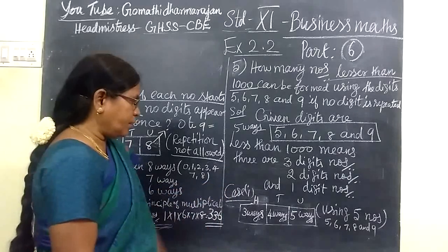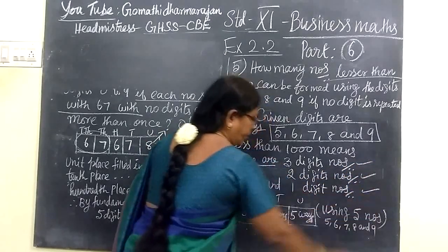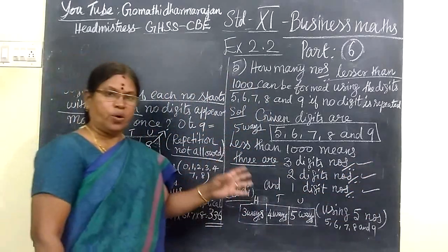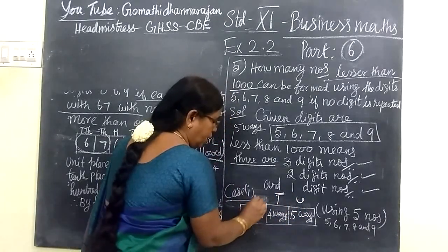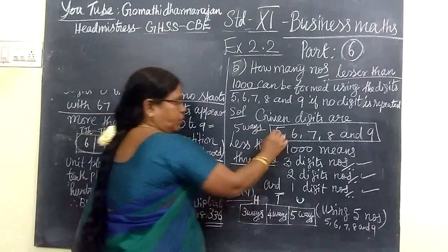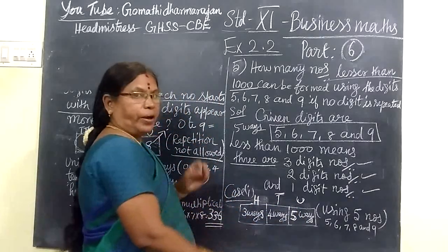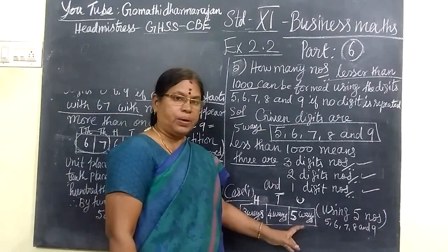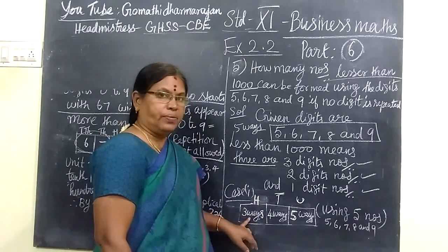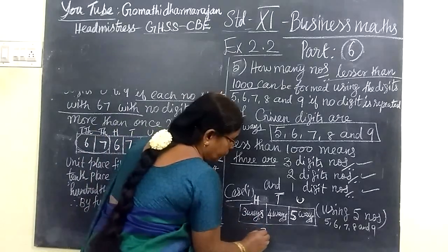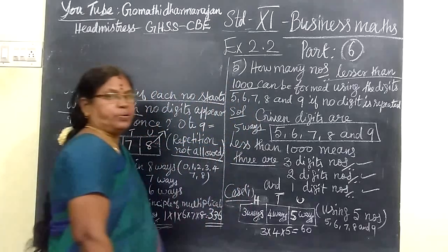Now come to the 3-digit number. You are going to form 3-digit numbers, 2-digit numbers, then 1-digit number. Case 1: you are forming 3-digit number. So for 3-digit number, this is unit place, tens place, hundreds place. Then 5 numbers, so you can use 5 ways. 5 numbers are there. This is unit place. Then 4 numbers are there, so 4 ways, and 3 ways. So this is 3 into 4 into 5. Now this is 60 numbers in case 1.